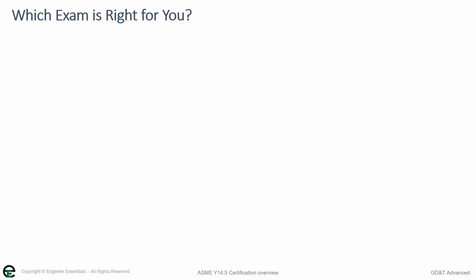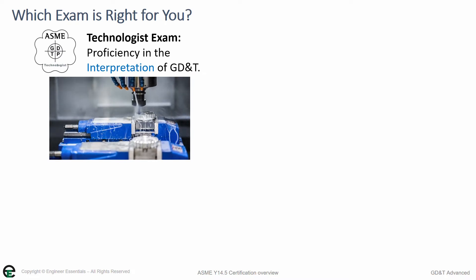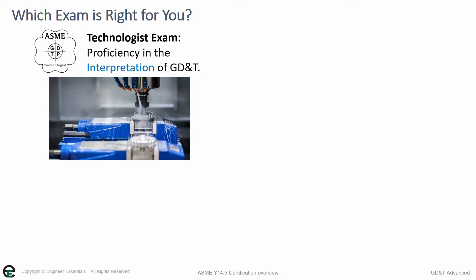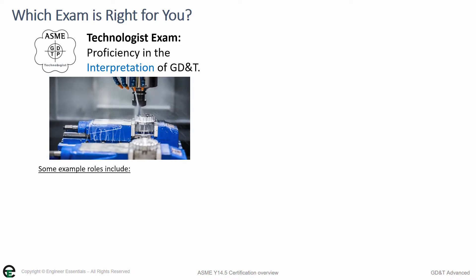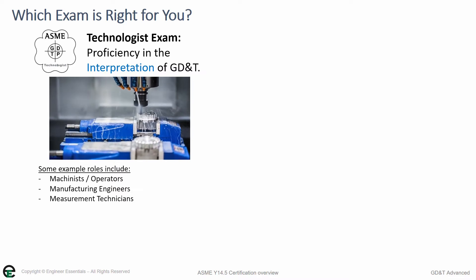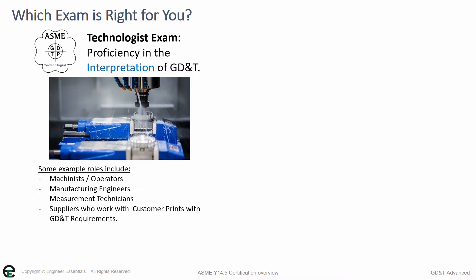So which exam is right for you? Well, it all depends on how you'll be using GD&T. The GDTP Technologist exam is great for anyone who's looking to have proficiency in the interpretation of GD&T. Some example roles for this interpretation level would include Machinists and Operators, Manufacturing Engineers, Measurement Technicians, Suppliers who work with customer prints with GD&T requirements, and anyone who is working with GD&T on prints that have existing design requirements.